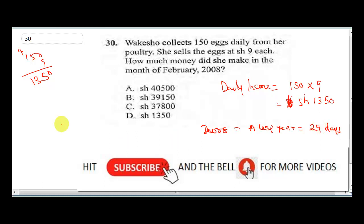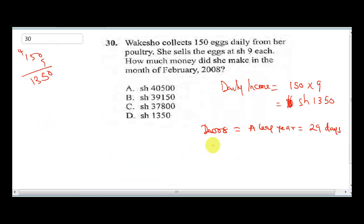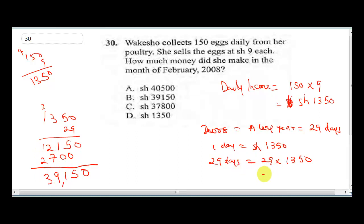So we're going to multiply because in one day Wakesho made 1350 shillings. That means in 29 days it would be 29 times 1350. Let's multiply: 9 times 0 is 0, 9 times 5 is 45 carry 4, 9 times 3 is 27 plus 4 is 31 carry 3, 9 times 1 is 9 plus 3 is 12. Then 2 times 1350 gives us 2700. When you sum it up, the final answer is 39,150 shillings. So the correct answer here is B. Please, if you haven't hit the subscribe button, do hit the subscribe button because we'll be releasing several videos. Just stay tuned as we continue.